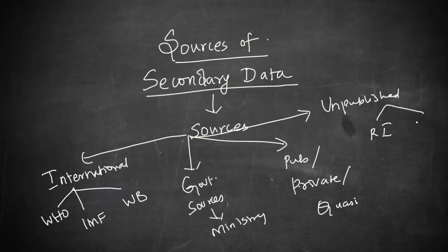And of course, there will be various unpublished sources. I mean, this can be, it may be owned by research institutes, it may be by or with researchers. So these are all basically the common or known four sources for secondary data.